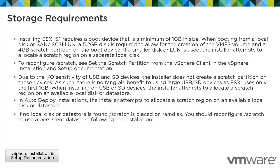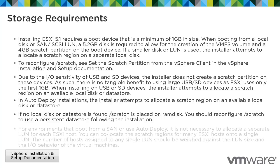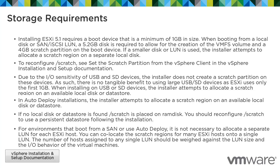If no local disk or data store is found, the scratch partition is placed on the RAM disk. You should reconfigure the scratch partition to use a persistent data store following the installation. For environments that boot from a SAN or use auto-deploy, it is not necessary to allocate a separate LUN for each ESXi host. You can co-locate the scratch regions for many ESXi hosts onto a single LUN. The number of hosts assigned to any single LUN should be weighed against the LUN size and the I/O behavior of the virtual machines.